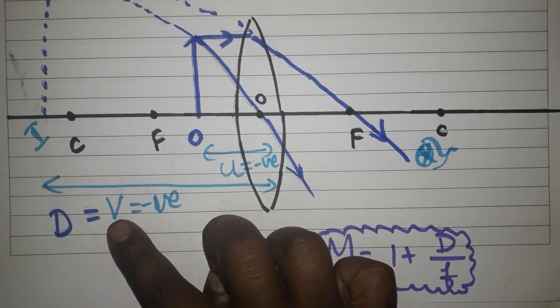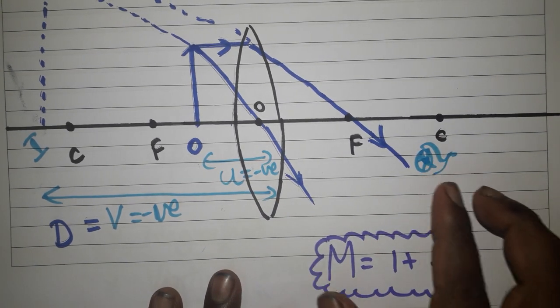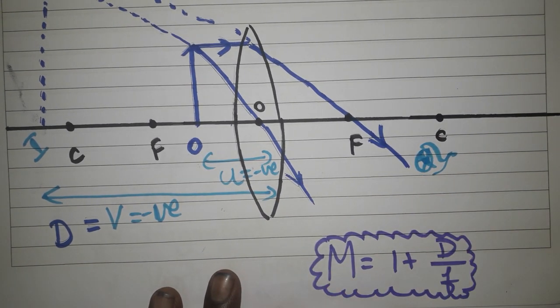The final image I am taking is formed at least distance, because our human eye has the least distance of 25 centimeters. Within 25 centimeters, it will produce a lot of power of accommodation and you will feel more stress.